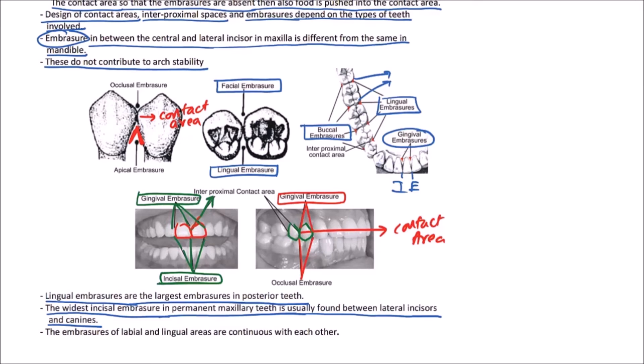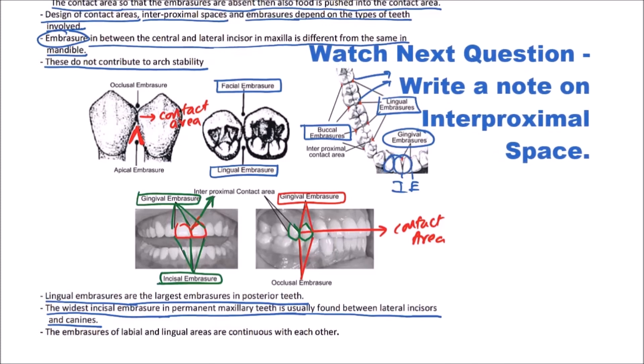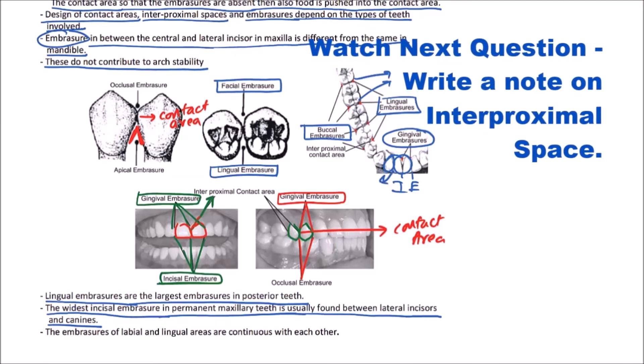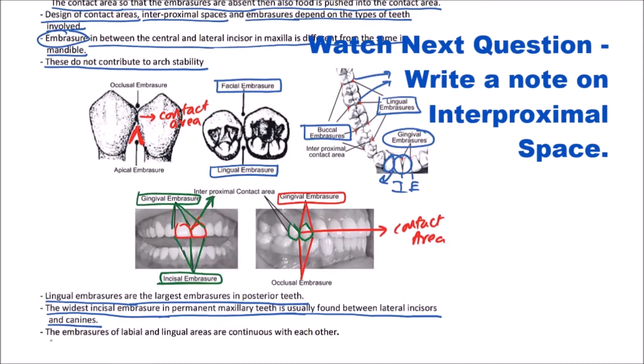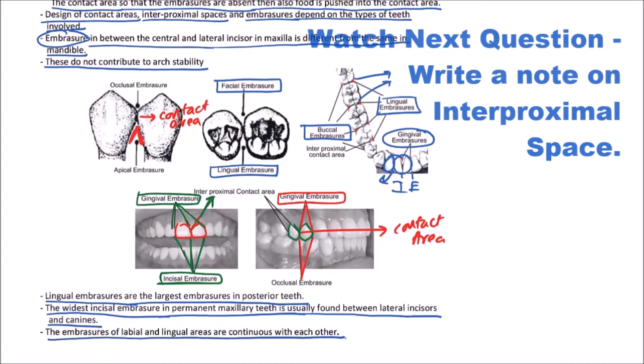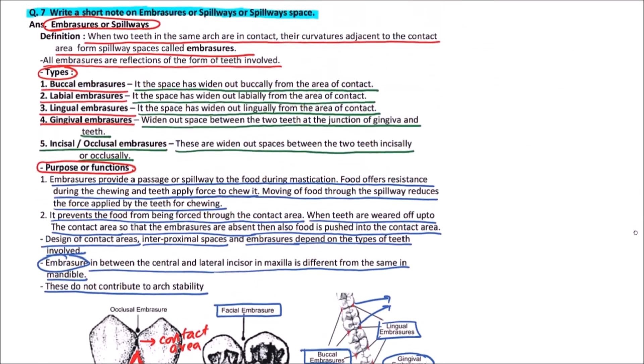So, the widest incisal embraces is observed in permanent maxillary teeth between lateral incisors and canine. If these are the lateral incisors and this one is canine, then here we can observe the widest incisal embracer. Now, embracer of the labial and lingual areas are continuous with each other. So, these are the various points about the embraces or spillways.